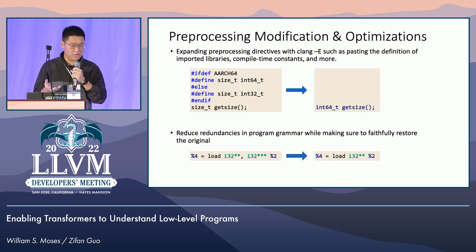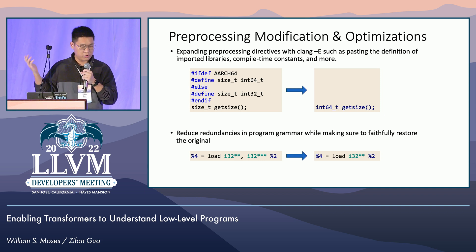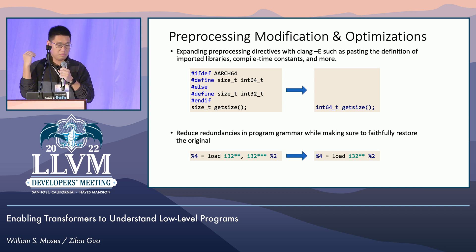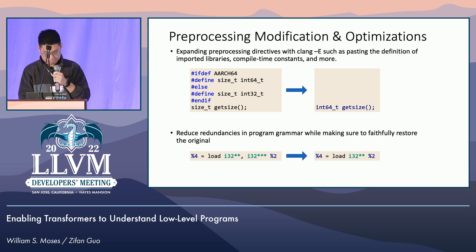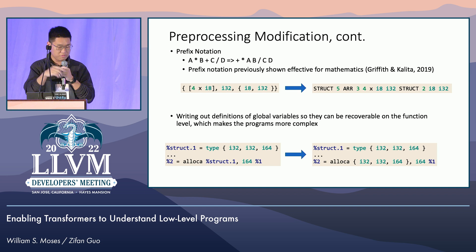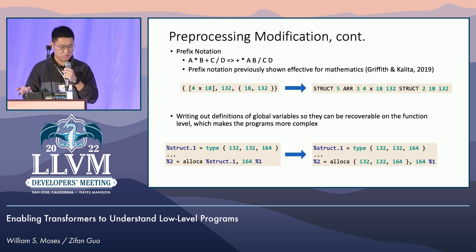We also performed pre-processing modifications because LLVM is verbose and repetitive, and it's hard for the machine learning model to understand. So we simplified the language a bit by first running Clang -E, as well as reducing redundancy in grammars that are predictable and recoverable — for example, for every load operation you have a data type and then a pointer to the data value; we just remove the pointer to it. We also changed our notation from infix notation to prefix notation. This has been shown to be very successful for having transformers do math, and we have shown similar success with changing our data representations to prefix notation.